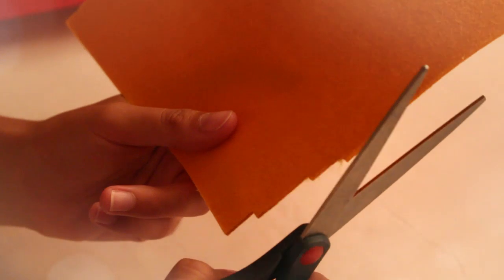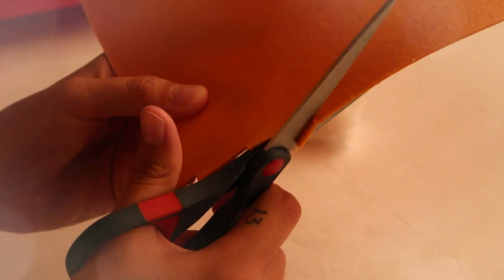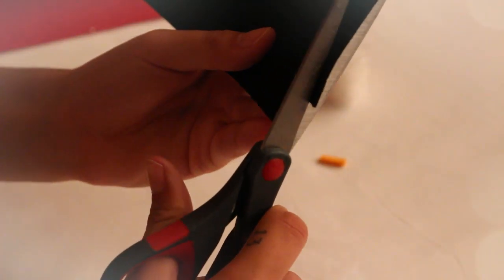To make the beak, cut out a small rectangle of yellow felt. Make sure you refer back to your pom pom that the size is correct. For the eyes, cut out two tiny squares of black felt.